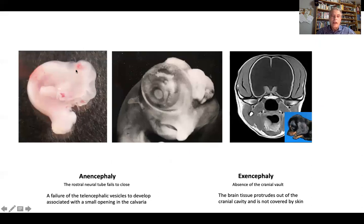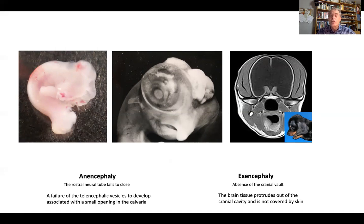Here you have two chick embryos. The first has anencephaly — the rostral neuropore fails to close. The second has exencephaly — the absence of the cranial vault, where the brain tissue protrudes out of the cranial cavity and is usually not covered by skin. And here you have hydrocephaly, where the lateral ventricles are very distended.